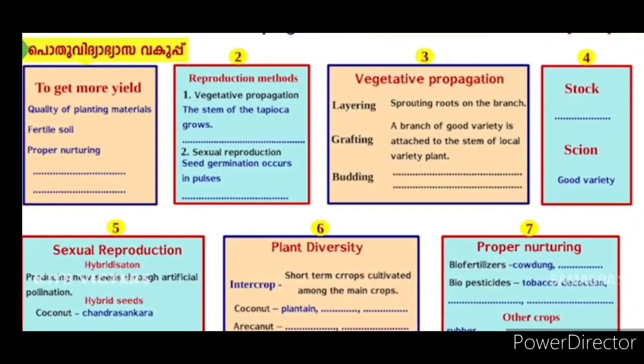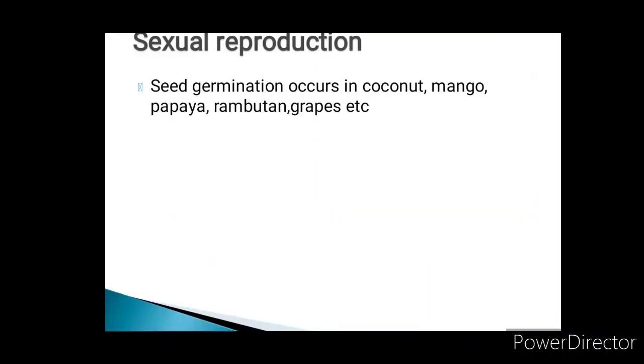The second one is sexual reproduction. Seed germination occurs in pulses. These are examples of plants propagated through seeds. In coconut and mango, the plants are propagated in the same way.